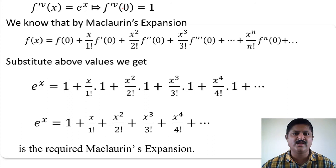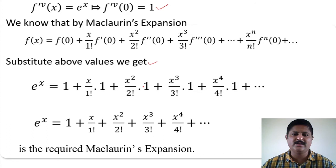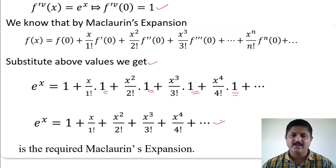We know that by Maclaurin series expansion, f(x) equals f(0) plus x over 1 factorial f'(0) plus x squared over 2 factorial f''(0) plus x cubed over 3 factorial into f'''(0) plus so on plus x to the power n divided by n factorial f^n(0) plus so on. Therefore e to the power x equals 1 plus x over 1 factorial plus x squared over 2 factorial plus x cubed over 3 factorial plus x to the power 4 over 4 factorial plus so on, which is the required Maclaurin's expansion of e to the power x.